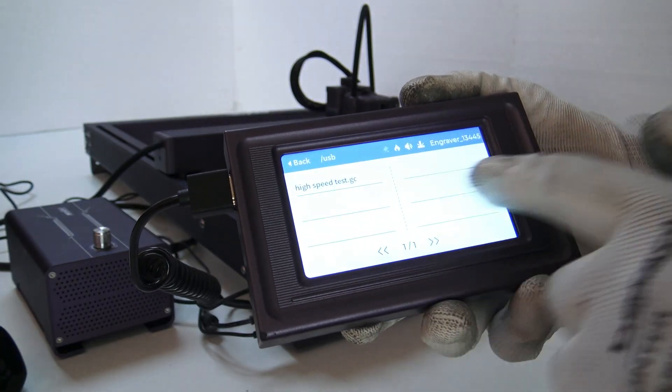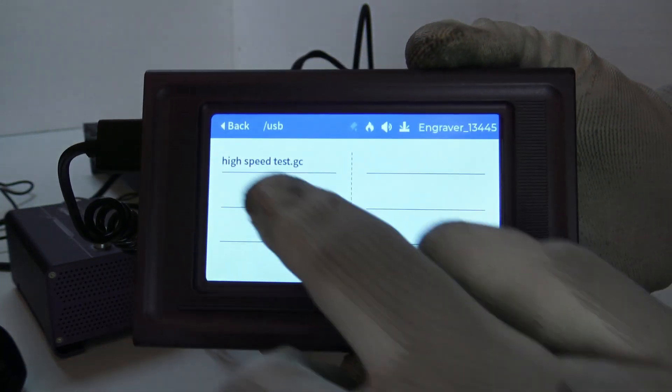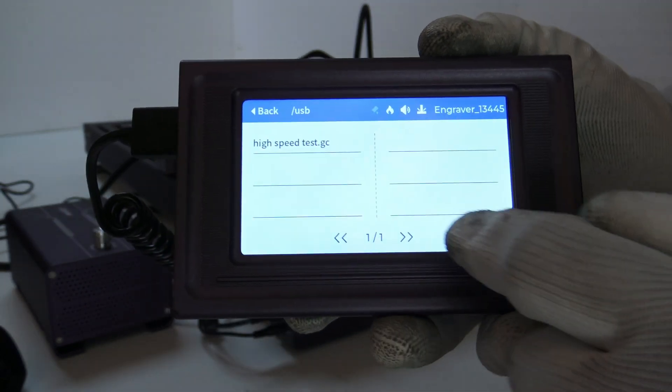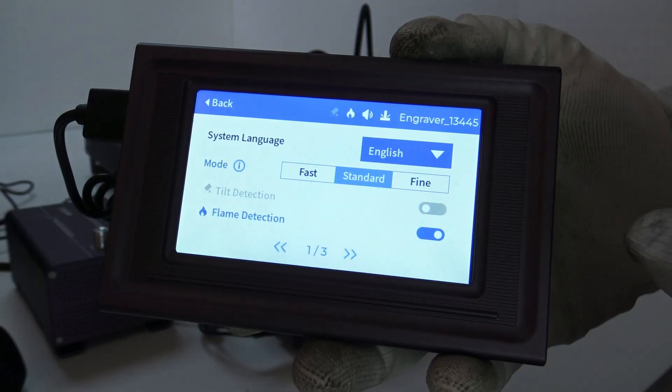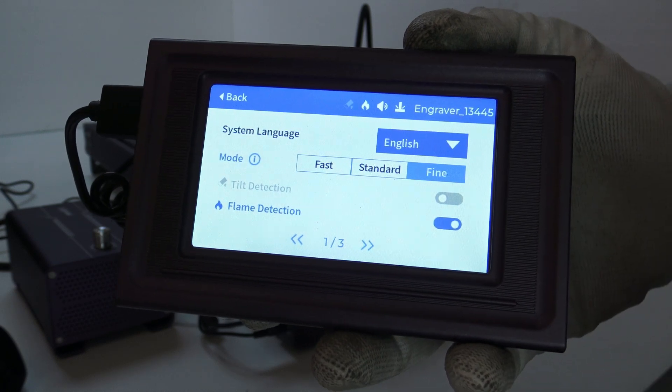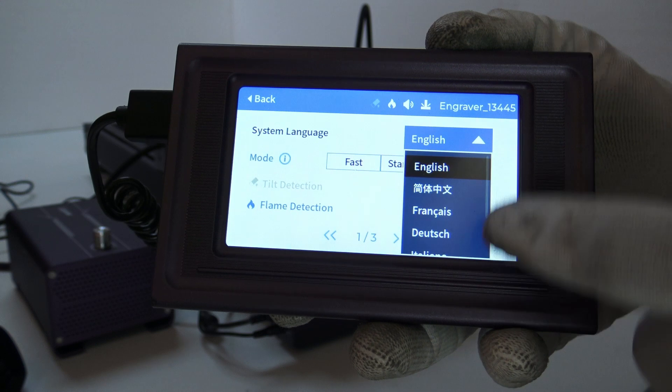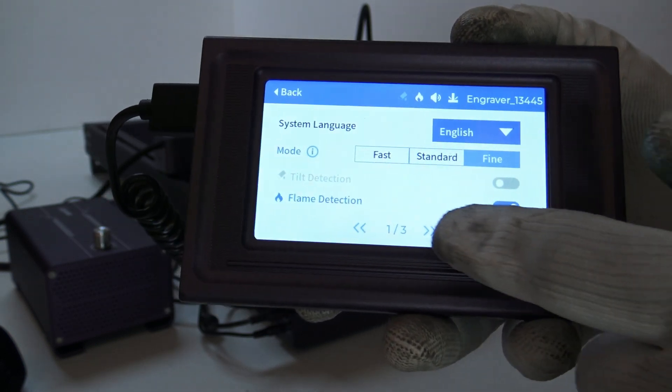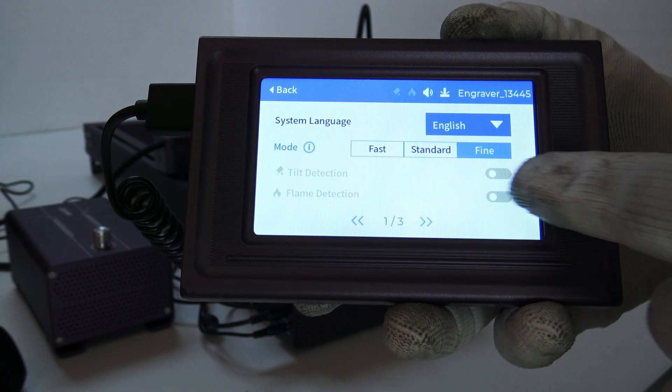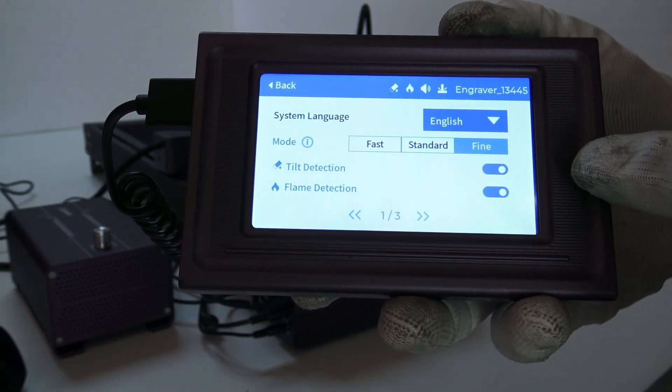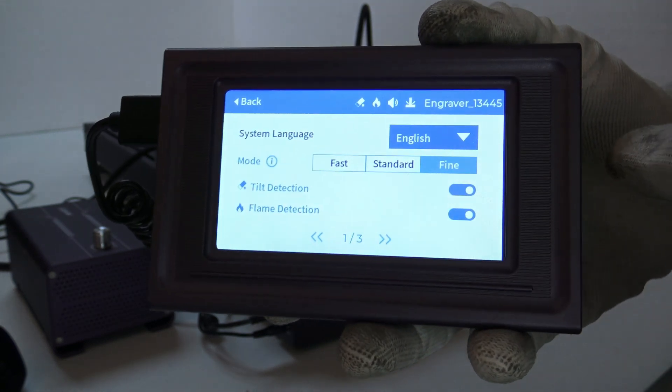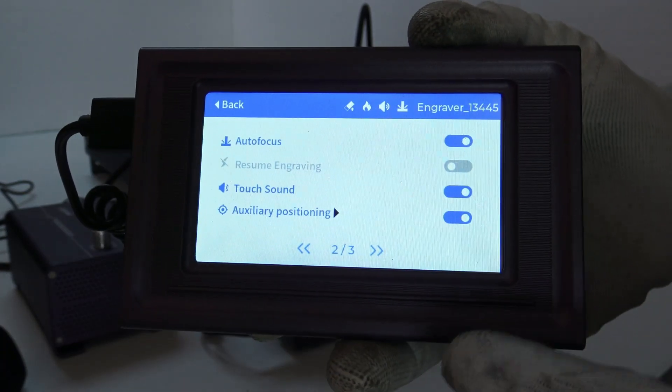The L2 comes with a 4.3-inch intelligent touch screen that simplifies the workflow of your daily projects, letting you manage the most used tasks directly from the touch screen, such as turning off the flame detector, turning on auto-focusing, and similar to a smartphone, making your engraver thoughtful like an aerial assistant for yourself.